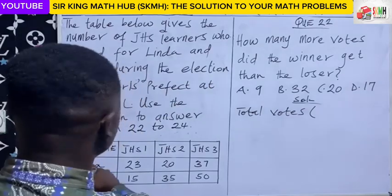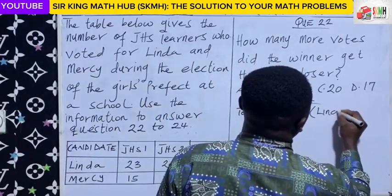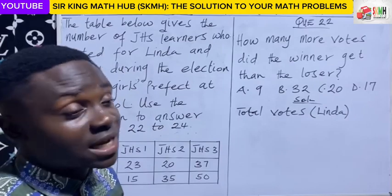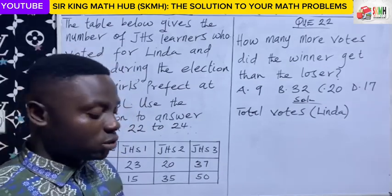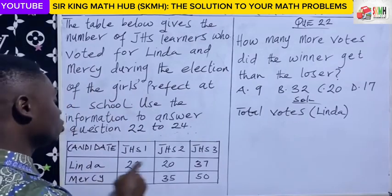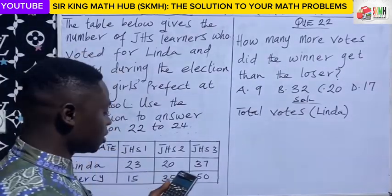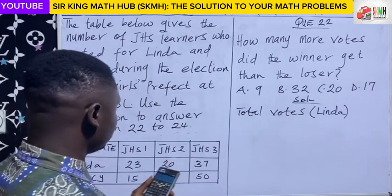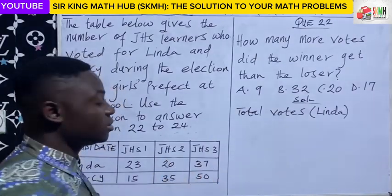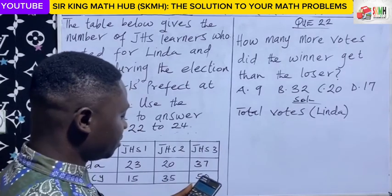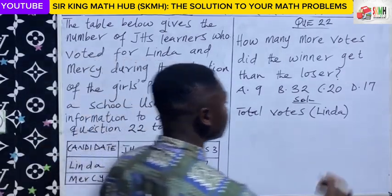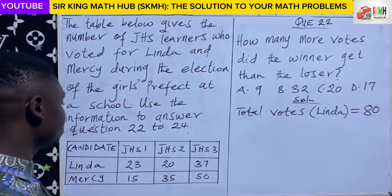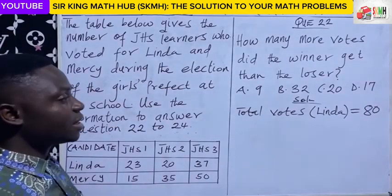Let's calculate the total votes for Linda. During the exams, calculators are allowed, so we can use the calculator. Linda's total votes: GHS1 gave 23, plus GHS2 gave 20, plus GHS3 gave 37, and this gives us 80. So Linda accrued 80 total votes.